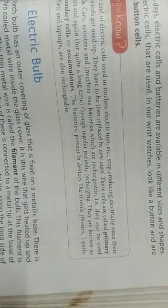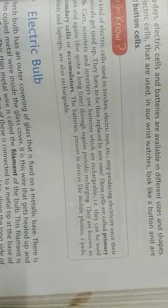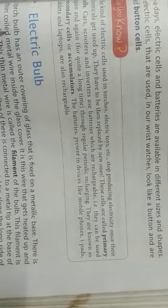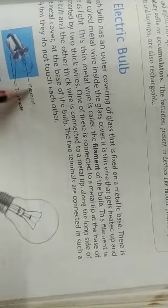Electric cells and batteries are available in different sizes and shapes. The electric cells that are used in wristwatches look like buttons and are said to be button cells. Electric bulbs have terminals: positive and negative terminal.